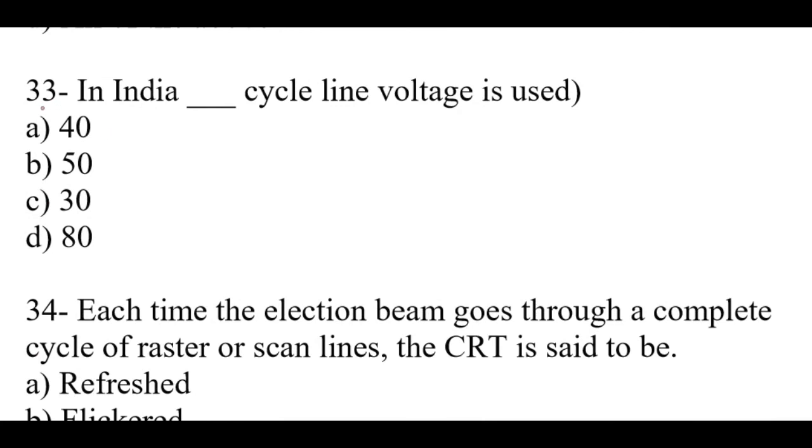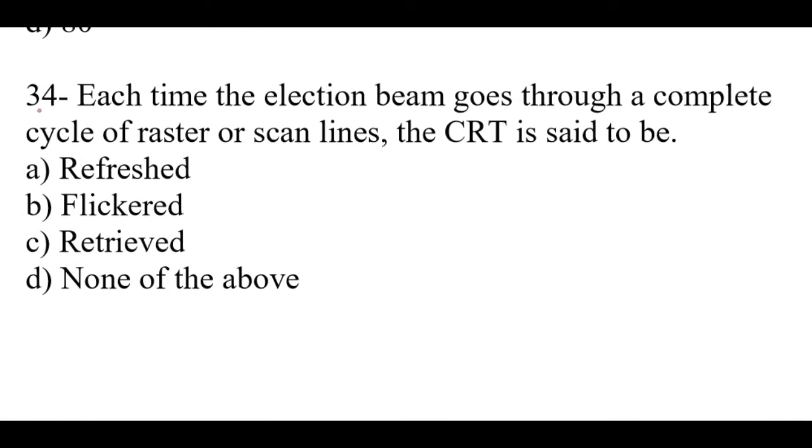Question number 33: In India, dash cycle line voltage is used. Right option is B, 50. Question number 34: Each time the electron beam goes through a complete cycle of raster or scan lines, the CRT is said to be dash. Right option is A, refreshed.